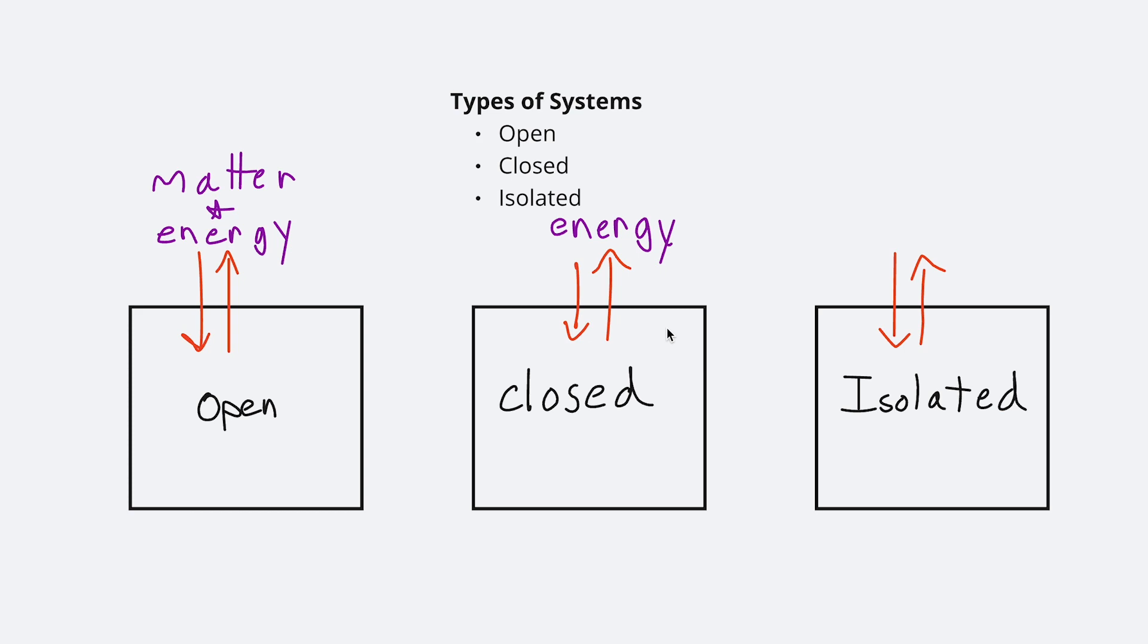The last one is an isolated system. For an isolated system, there is no exchange of anything - no matter exchange and no energy exchange. Isolated systems would have to be totally sealed off as well as very insulated. The sealing off prevents any exchange of matter, and then the insulation prevents any exchange of energy.